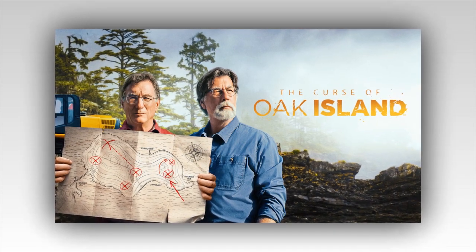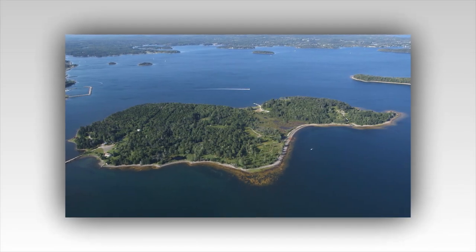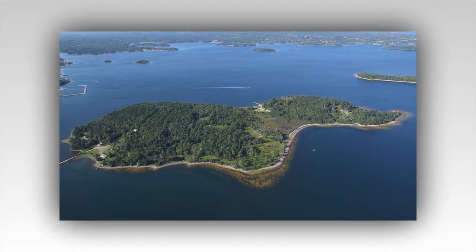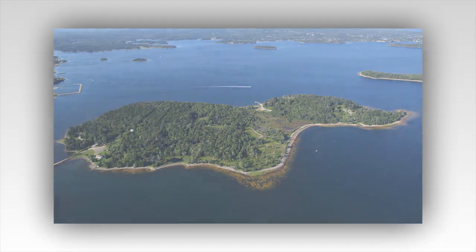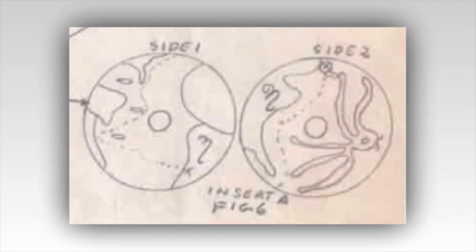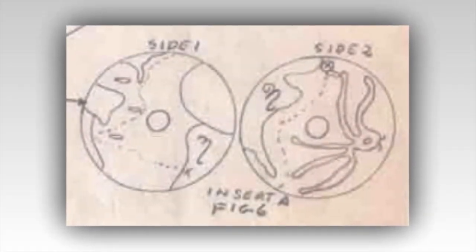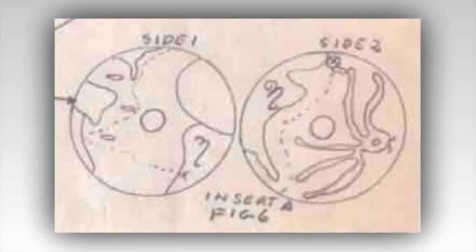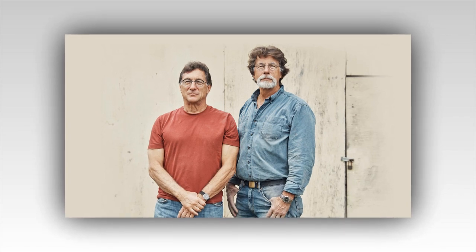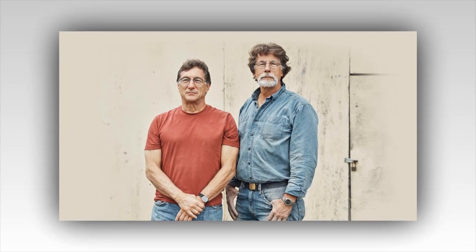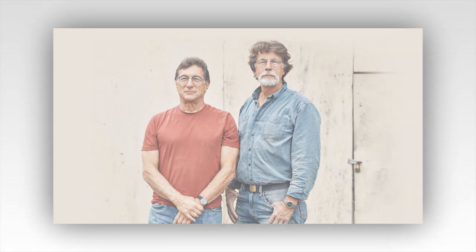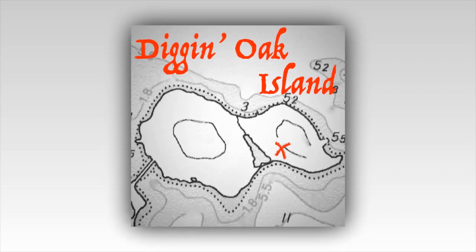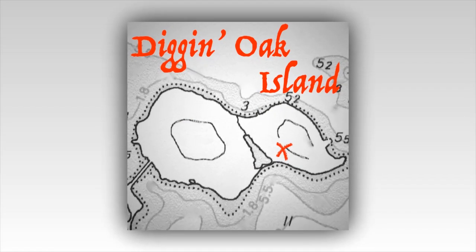Adding to the mystery, Halpern's map is accompanied by a narrative suggesting that it was created by a French cartographer under the direction of the Templar Knights. This narrative posits that the Templars, fleeing persecution in Europe, may have buried their treasures on Oak Island as they sought a new refuge in the New World. While this theory is compelling, it remains speculative, with historians and researchers divided on its plausibility.